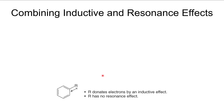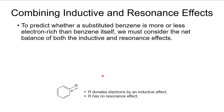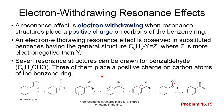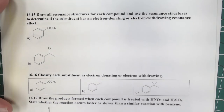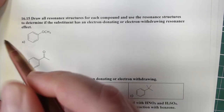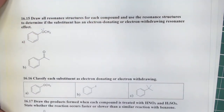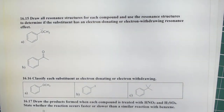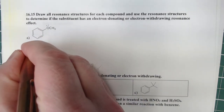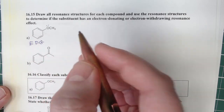When we combine inductive and resonance effects, we can determine the total effect on the ring. For example, a substituent with a lone pair directly on the atom adjacent to the benzene ring will donate electron density — it is an electron-donating group. We push that lone pair into the ring to draw the resonance structures.